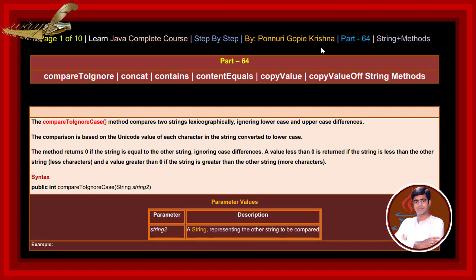The comparison is based on the unicode value of each character in the string converted to lowercase. The method returns 0 if the string is equal to the other string ignoring case differences, a value less than 0 if the string is less than the other string (fewer characters), and a value greater than 0 if the string is greater than the other string (more characters).